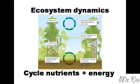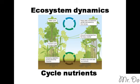Ecosystem dynamics has two processes. One of the processes is to cycle nutrients, and the other one is to cycle energy. Cycling of nutrients includes all the elements, decomposition, and soil. Plants get stuff from the ground — nutrients, ammonia, all that.